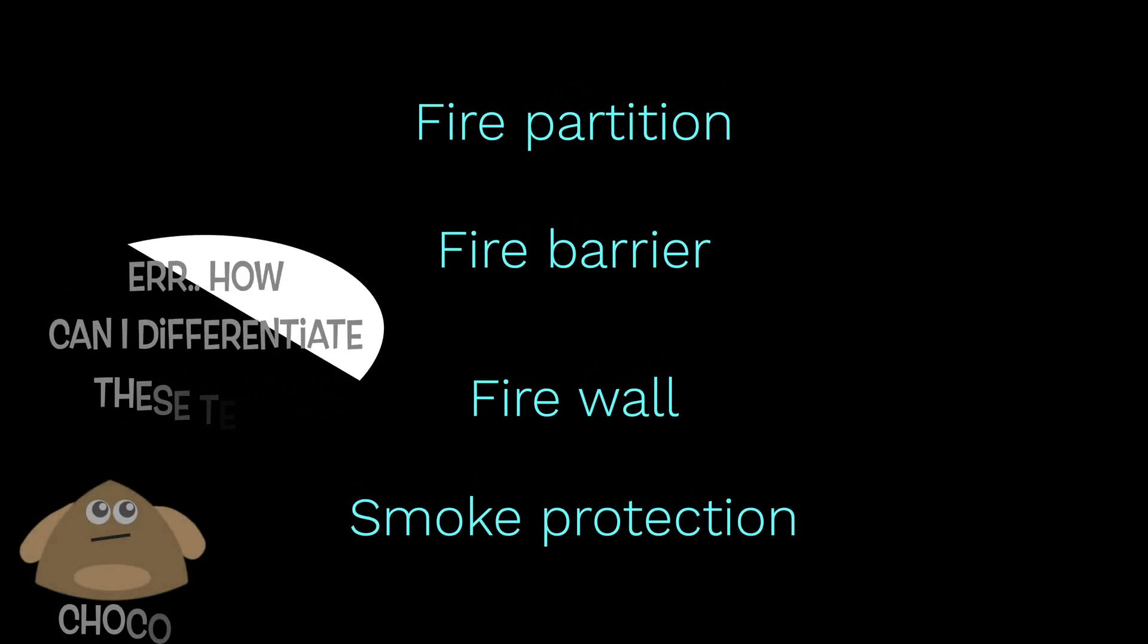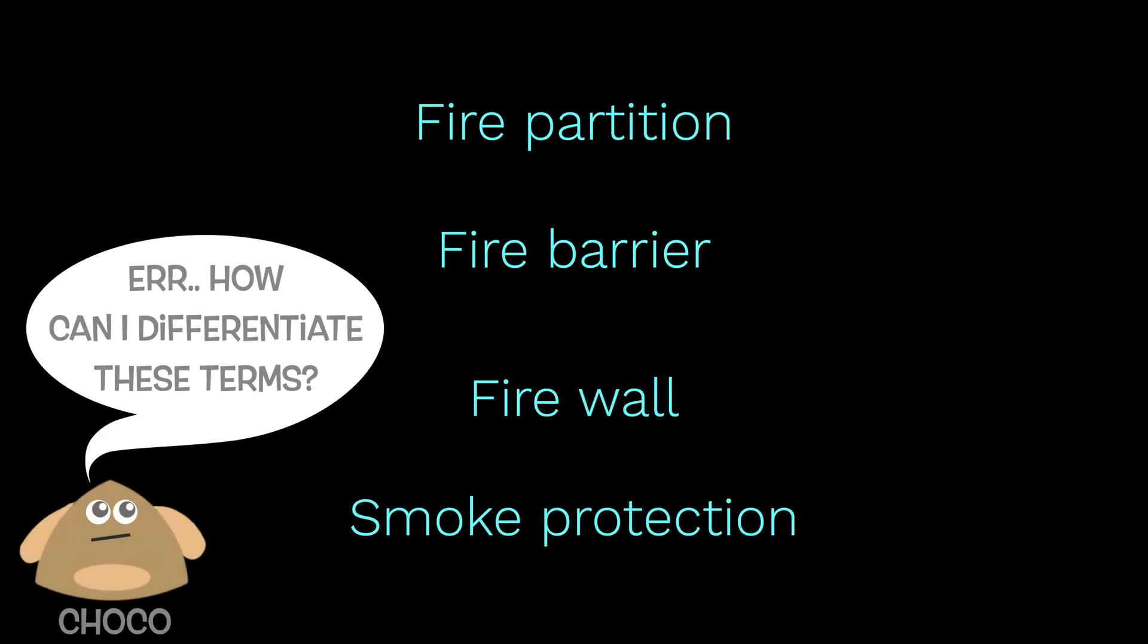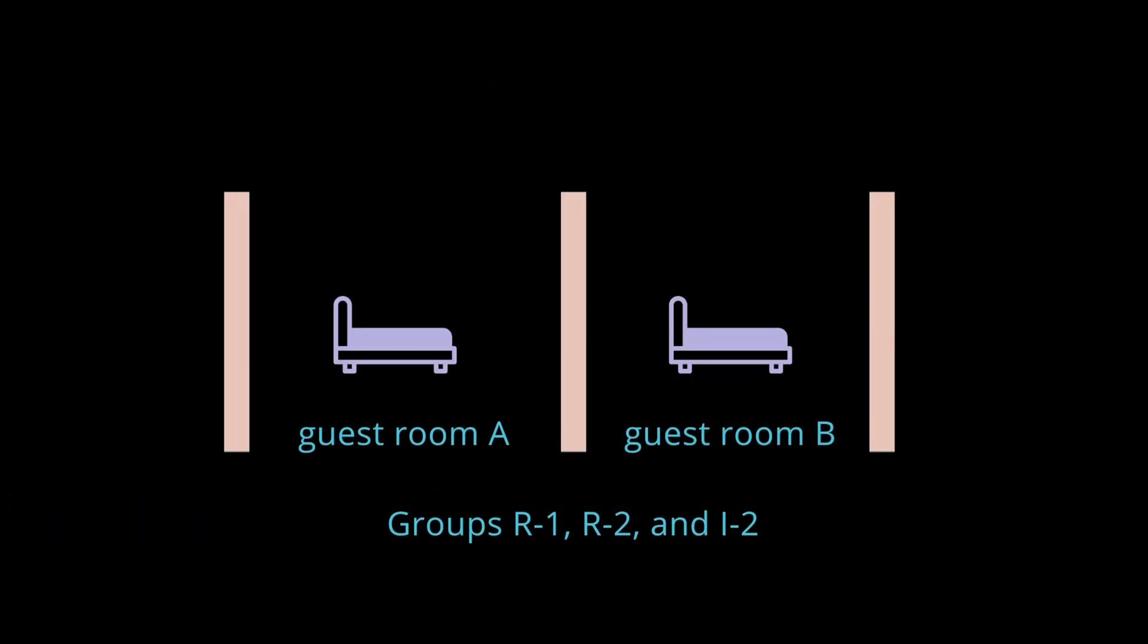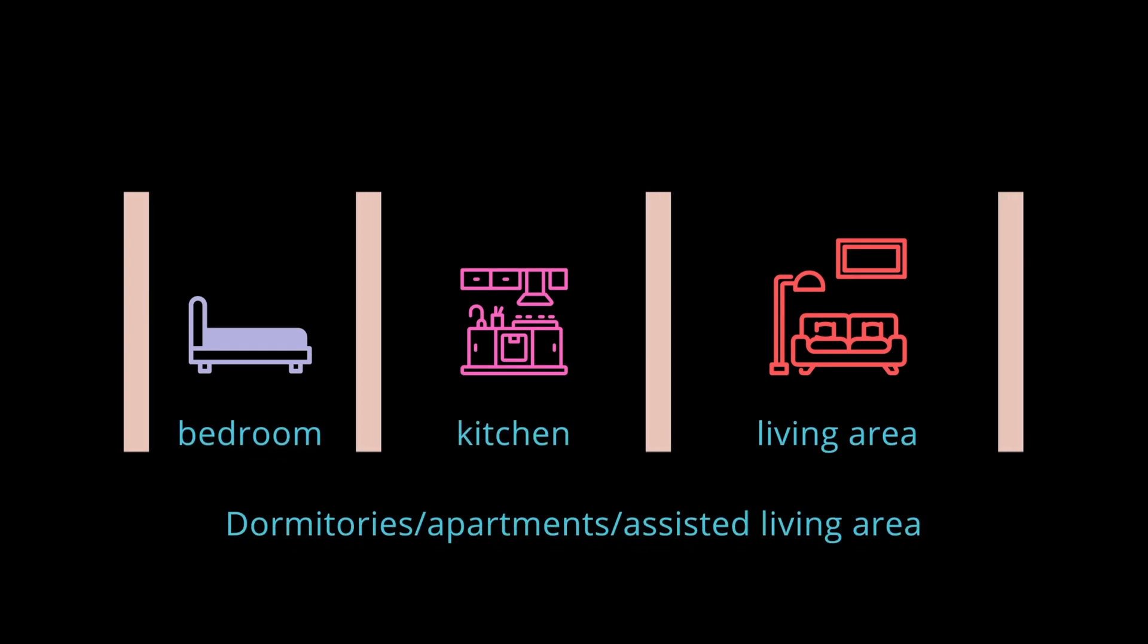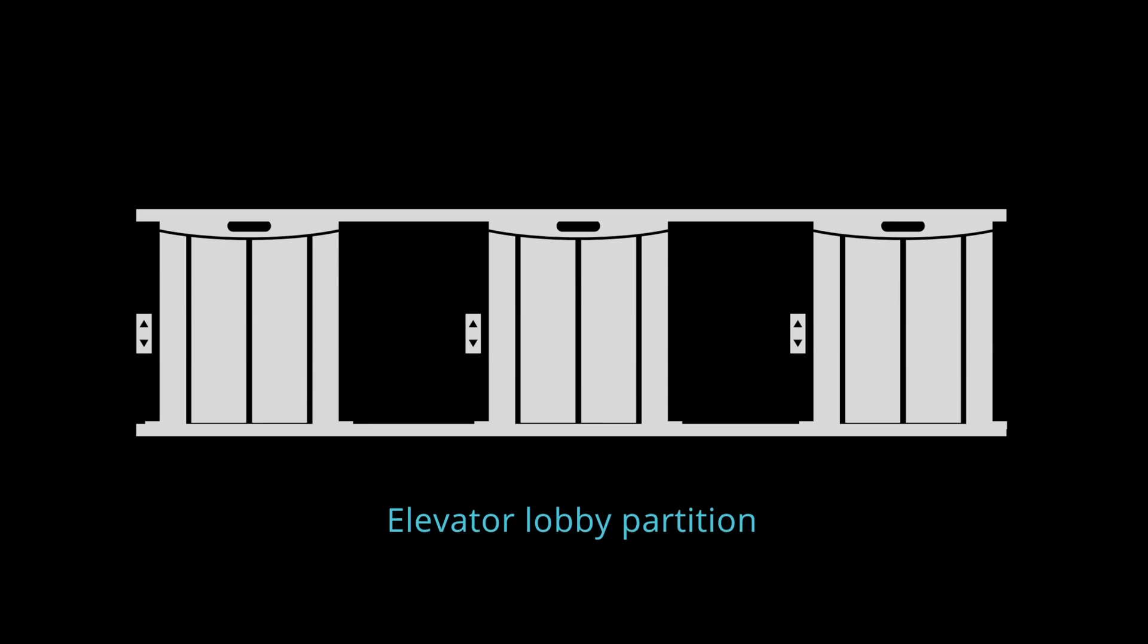When dealing with fire and smoke protection, you'll encounter these four words. So what's the difference between these words? A fire partition is used to separate guest rooms for R-1, R-2, and I-2 occupancies, different rooms in dormitories, apartments, and assisted living areas, lobby partitions, partitions for each tenant in a covered mall, and corridor walls.